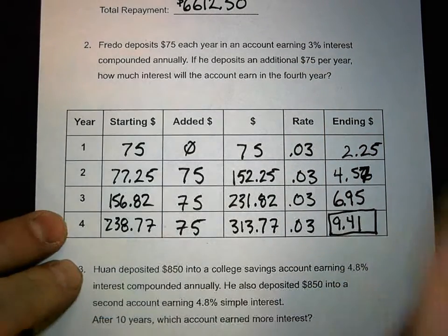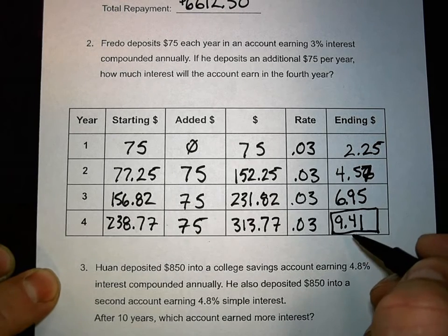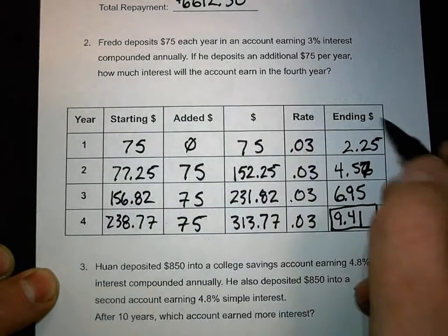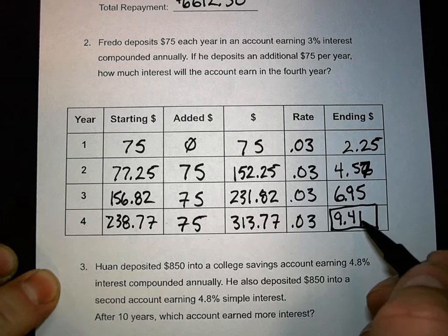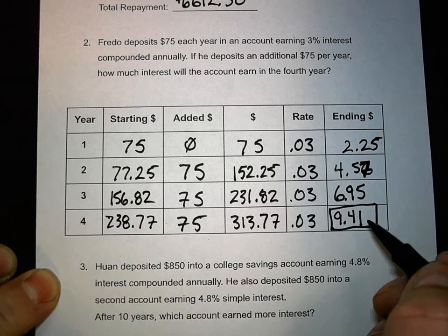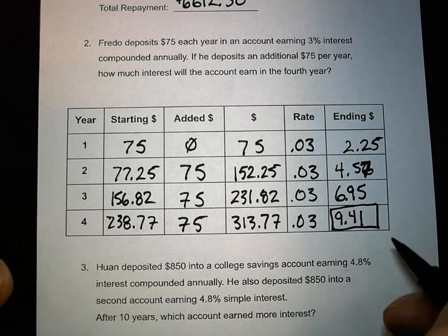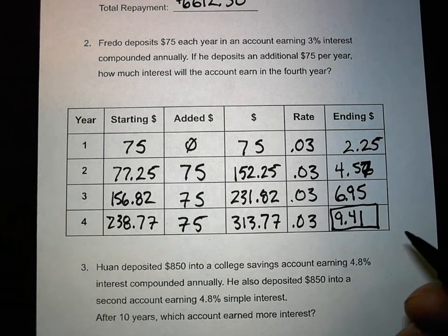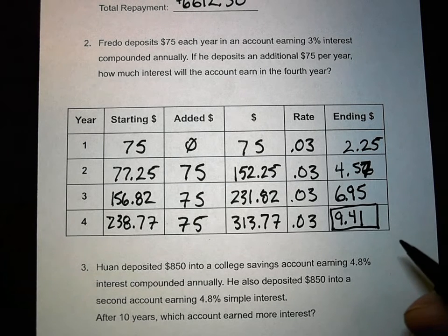Do you see the progression as it moves through each year? Now picture this is $75,000 — he'd be making $941. At a certain point there is a moment where your money just spirals upward fast. If you can reach that point, the money just goes.